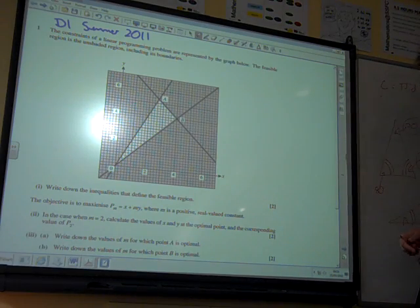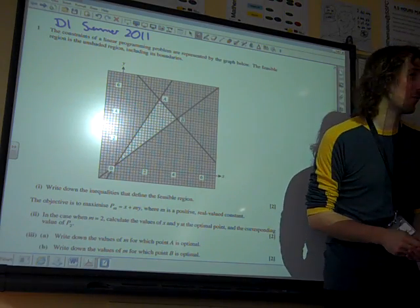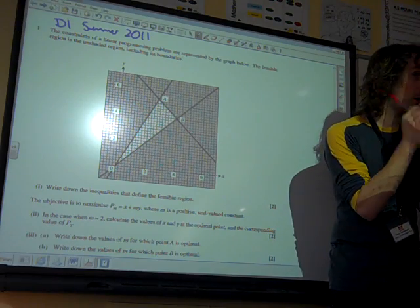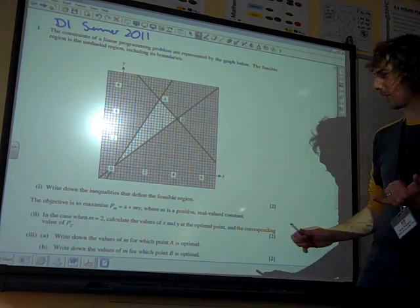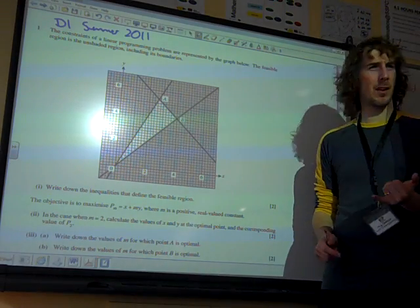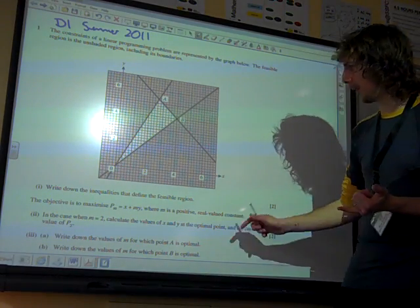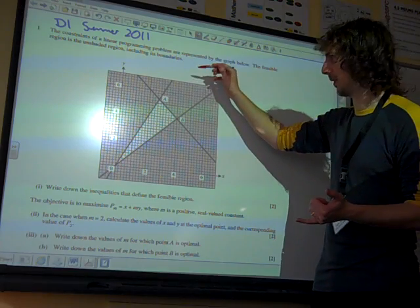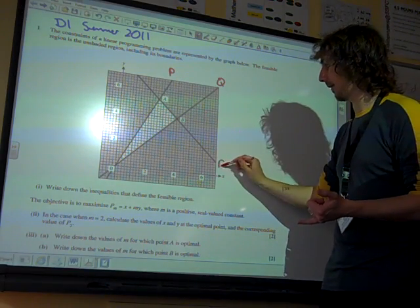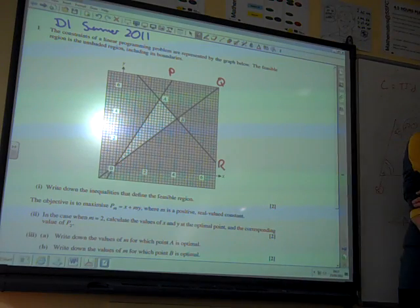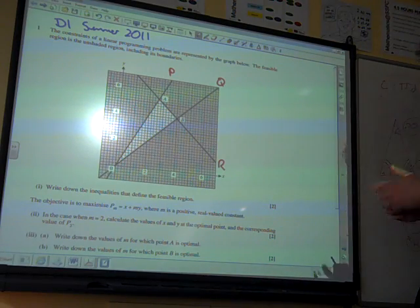Write down the inequalities that define the region. We know how to do this - we're going to work through them one by one. They haven't labelled the lines, so shall we label the lines just so we know what we're talking about? Let's call them lines P, Q, and R. I'm not going to use the letter S.